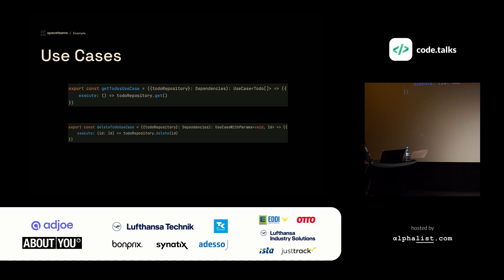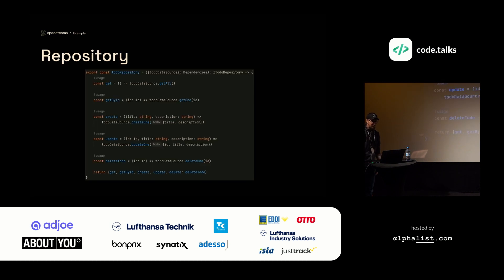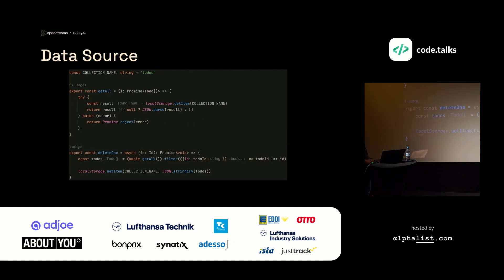Our use cases are pretty simple. In both cases, we're injecting the repository in the function header, and both return an execute method which simply calls the corresponding method on the repository — for example, the get method to get a list of all to-dos. The repository injects the to-do data source as a dependency and returns methods to update a to-do, get all to-dos, create a to-do, and so on — all calling corresponding methods on the to-do data source. The data source's getAll method, for example, retrieves the list of all to-dos from local storage and returns it as an array, and the deleteOne method filters out the specific to-do and updates local storage.